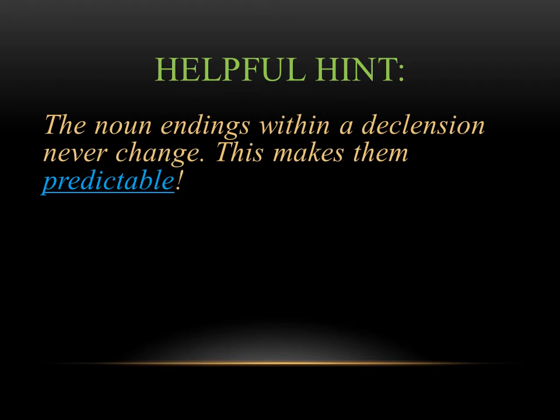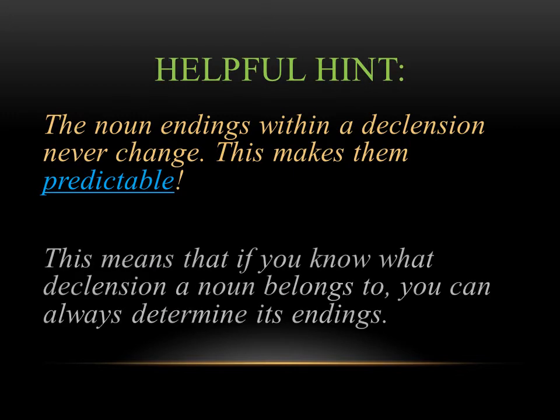Here's a helpful hint: the noun endings within a declension are always the same — they don't ever change. And since they don't change, this makes them predictable. This means that if you know what declension a noun belongs to, you can always determine what ending it's going to have and predict its endings when it's used differently in the sentence.